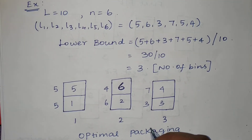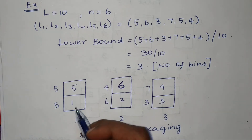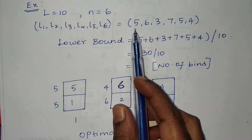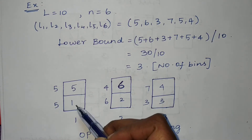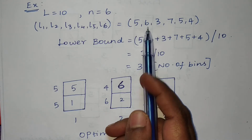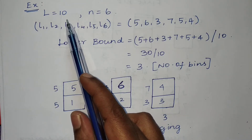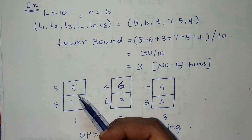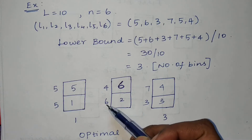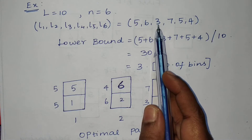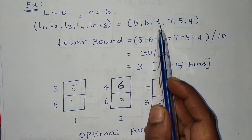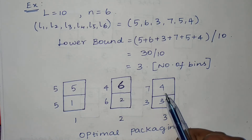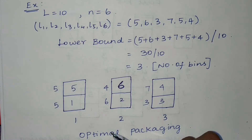Now let's see how we pack all the objects into the bins. We take three bins. Placing the first object (weight 5) into the first bin leaves 5 units of space. The second object (weight 6) exceeds that remaining space, so it goes into the second bin. For the third object (weight 3), even though space exists in the first two bins, we consider optimal packing.